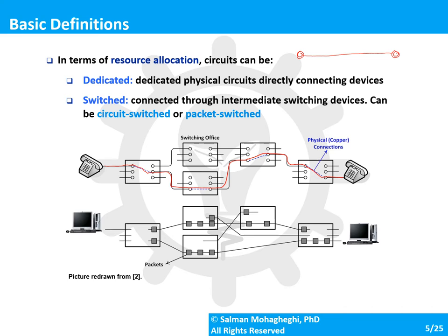In the circuit switching example, your voice data always goes through the same fixed path to the destination. In packet switching, the original data is broken into multiple packets and each is routed differently. In packet switching, packets will likely follow the same route when the network is not congested. When the network is congested, some routes may become unavailable, so packets must take alternate routes, which is why each one might travel through a different path.